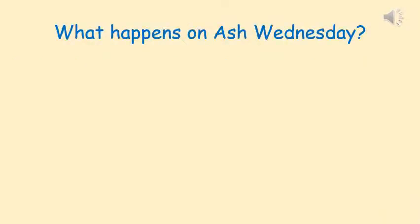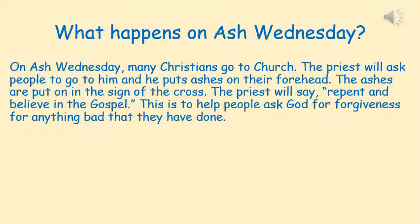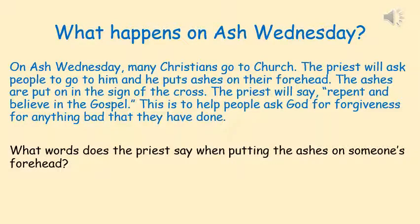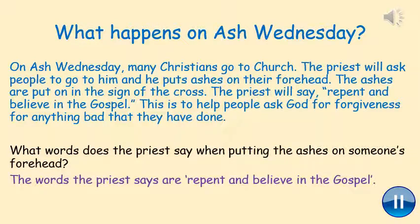What happens on Ash Wednesday? On Ash Wednesday many Christians go to church. The priest will ask people to go to him and he puts ashes on their forehead. The ashes are put on in the sign of the cross and the priest will say, 'Repent and believe in the gospel.' This is to help people ask God for forgiveness for anything bad that they have done. What words does the priest say when putting the ashes on someone's forehead? The words the priest says are: repent and believe in the gospel. The gospel is part of the Bible.